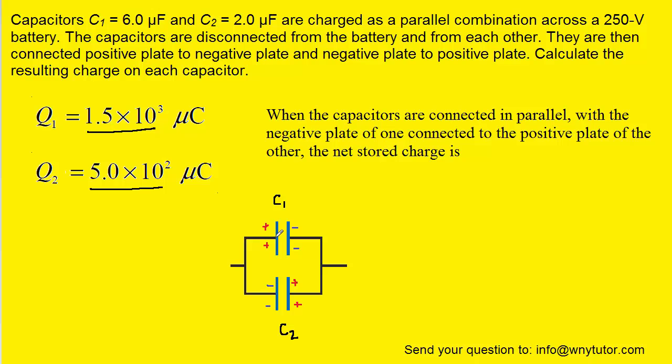Next, the capacitors are connected so that the positive plate of capacitor one is directly connected to the negative plate of capacitor two. Notice that they're also connected in a parallel arrangement.